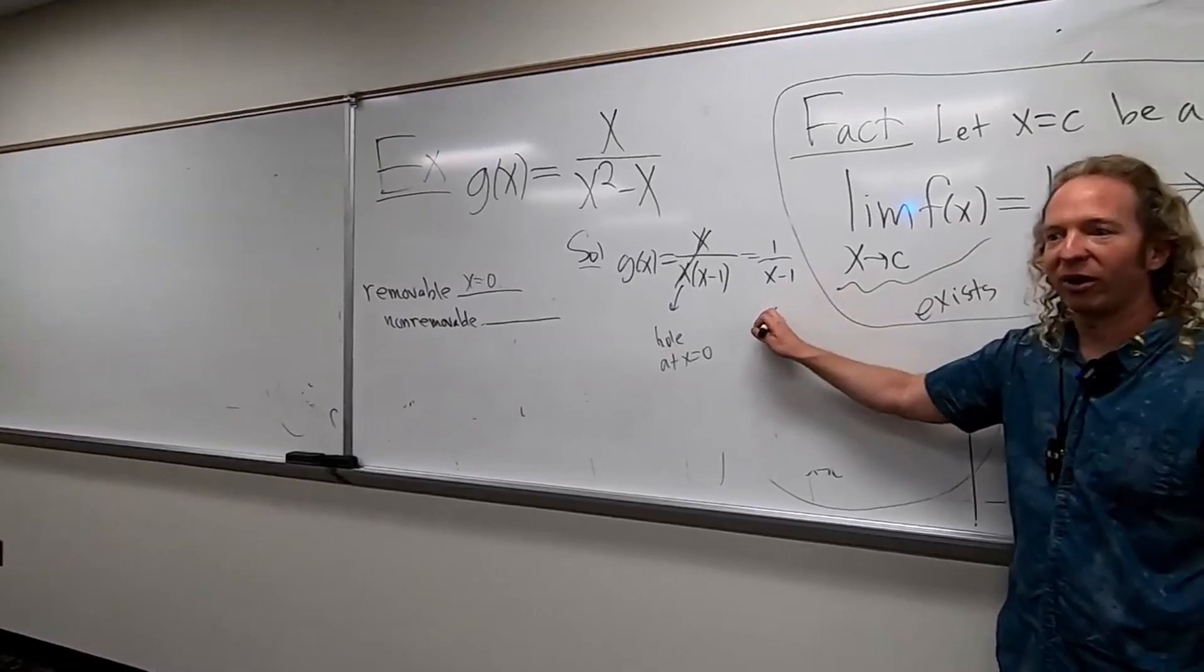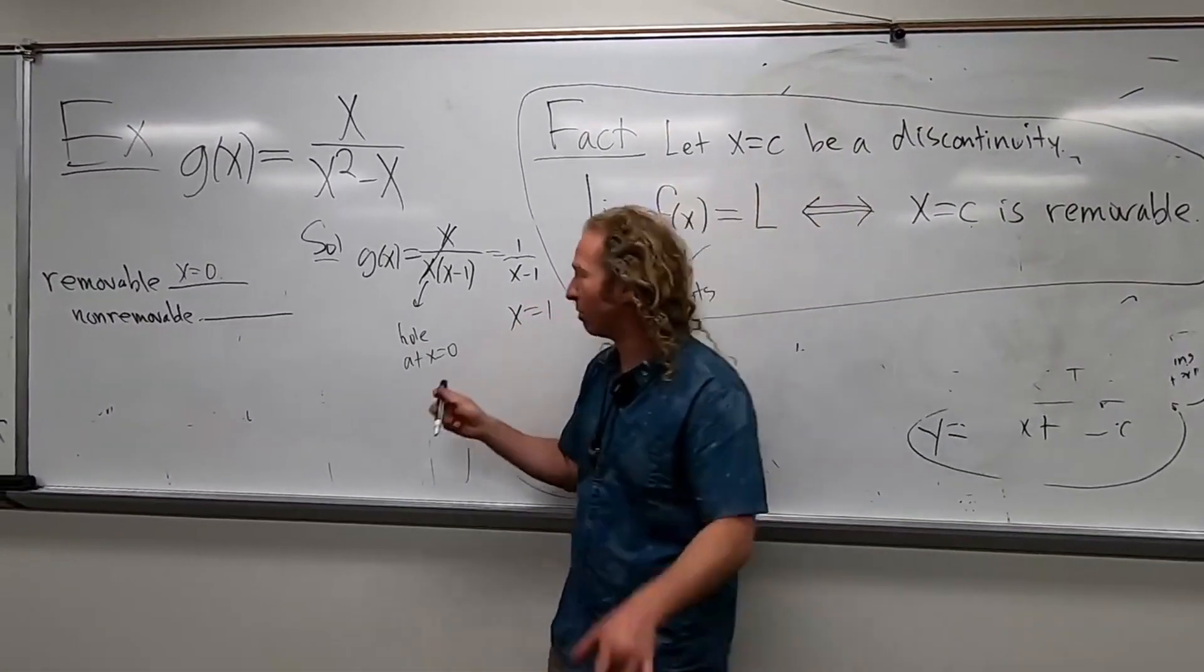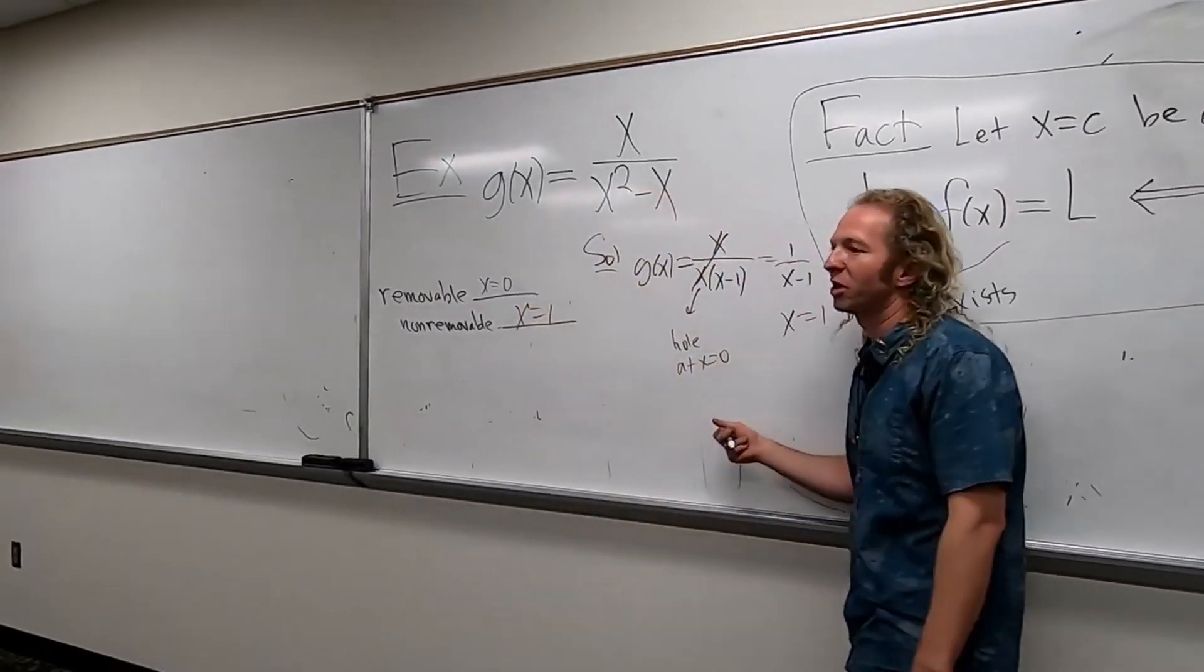And then this is a VA, right? X equals one. Would this be removable or non-removable? Non-removable, good, good. Easy, solid test question.